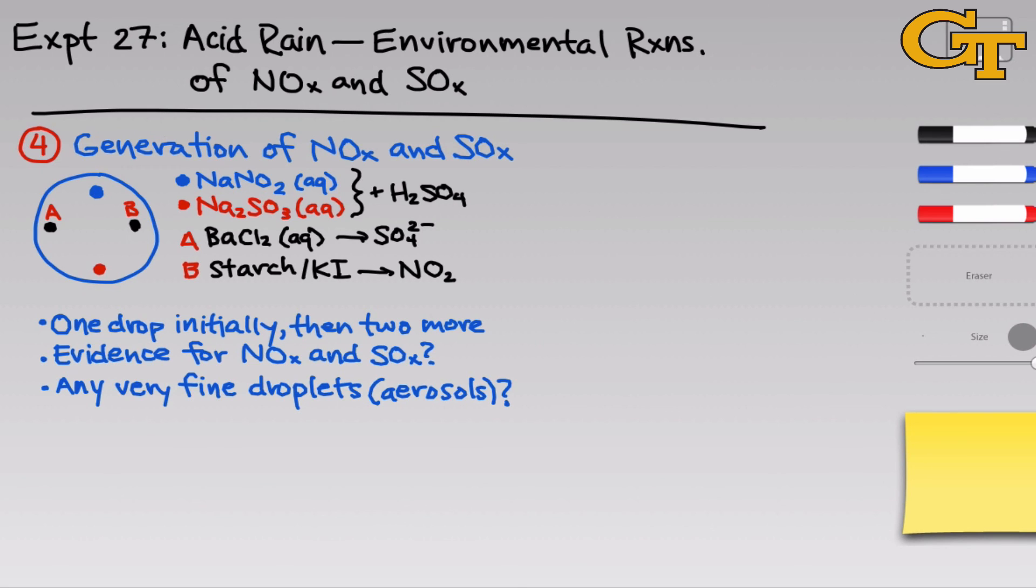In this part of the experiment, look for evidence of the production of NOx and SOx in the analytical droplets A and B. Additionally, look for the formation of any very fine droplets, which the lab manual refers to as aerosols. Aerosols may form if gases generated inside the chamber react with or bind to water vapor. The very tiny aqueous solutions thus generated look a lot like the condensation you might see on a windshield in winter.